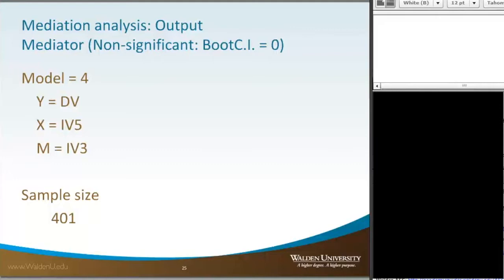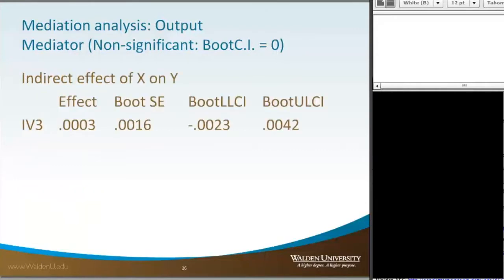Here we have a non-significant result where the bootstrapping confidence interval includes the value of 0. In the indirect effect output, our effect is pretty low at 0.003. There's our standard error. And the bootstrapping confidence intervals go from negative 0.0023 to positive 0.0042. So that includes the value of 0 and it's a pretty narrow range.